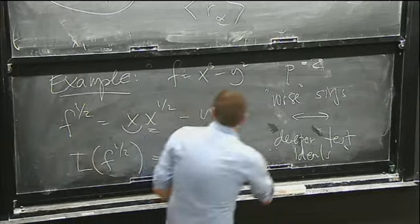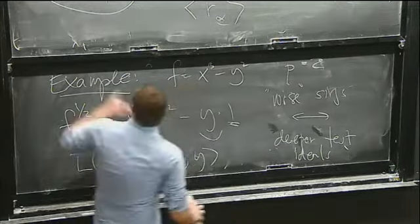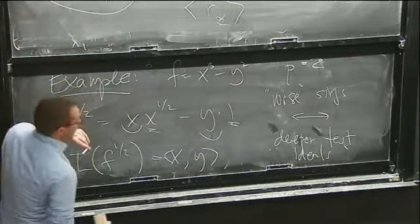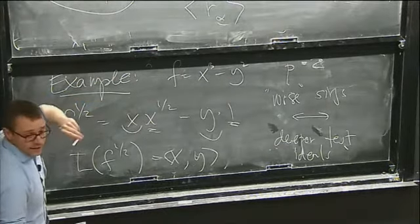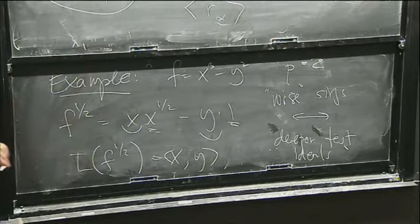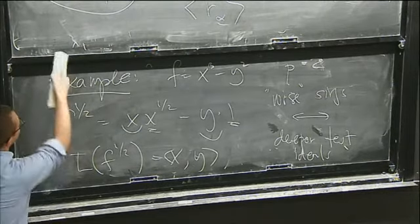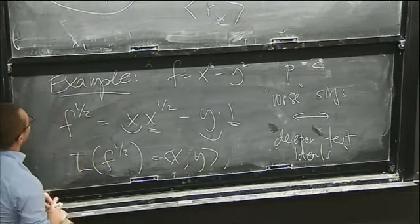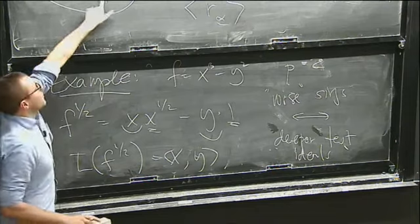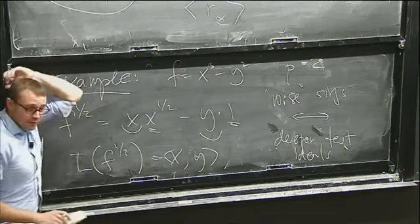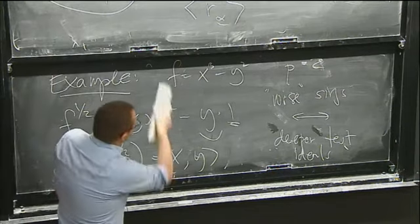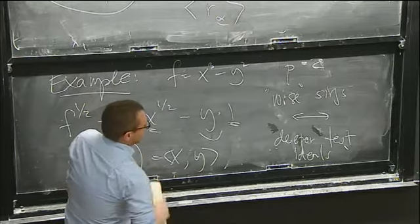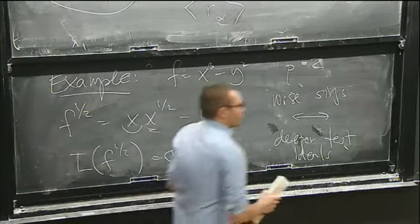I want to define this for all c's. I think this is a very natural measure of how badly this thing vanishes if it does. It's easy to do it for c's where the denominator is just a power of p, and what we're going to do is sort of limit with that to get it for an arbitrary exponent.